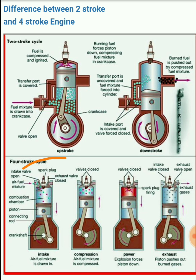In the two-stroke cycle, during the up stroke when the piston is moving upward, suction and compression are both completed. At the end of compression, ignition takes place. Then in the next down stroke as the piston comes down, the power stroke occurs and exhaust also takes place.